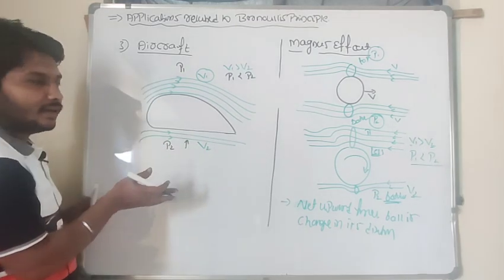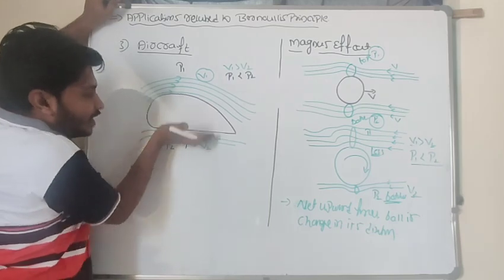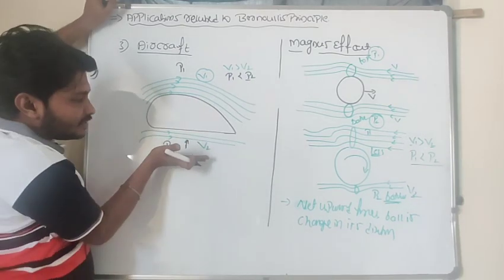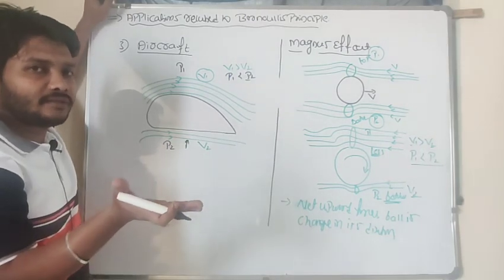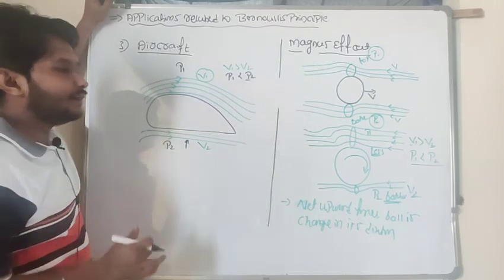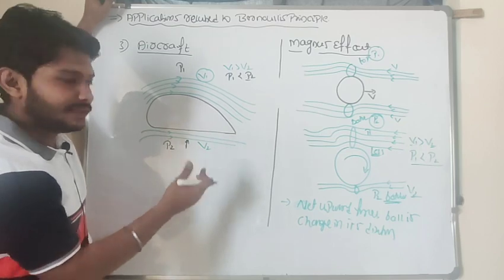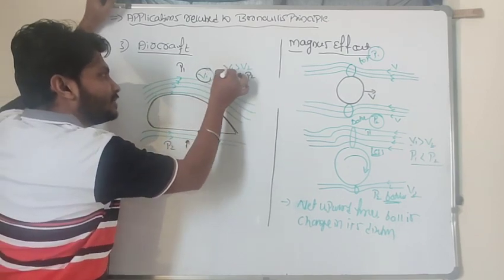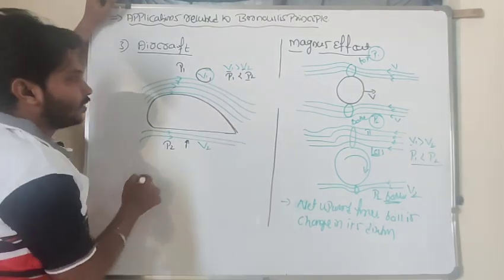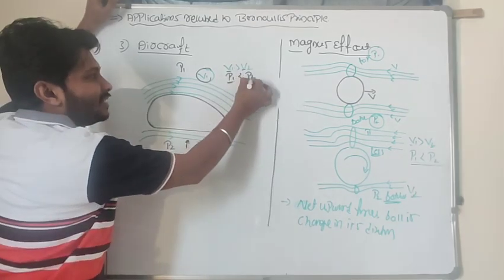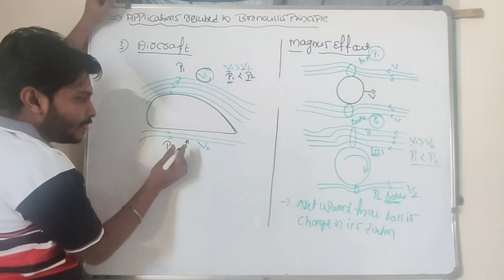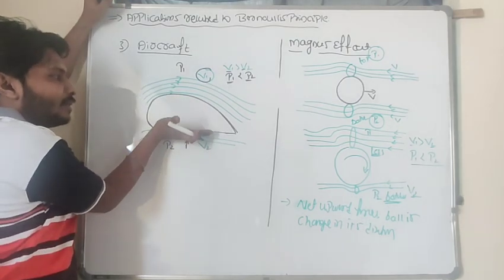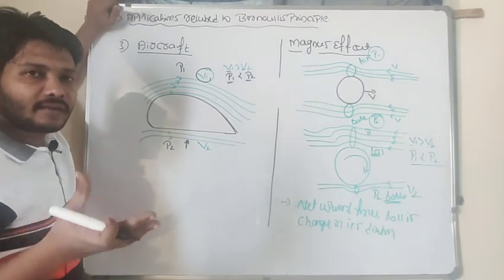Since P2 at the bottom is greater than P1 at the top, pressure P2 acts in the upward direction and lifts the aircraft body. The bottom side has more pressure, so P2 acting upward will take the body in the upward direction. This is how the aircraft works — the wing shape creates a velocity difference, leading to a pressure difference that generates lift.